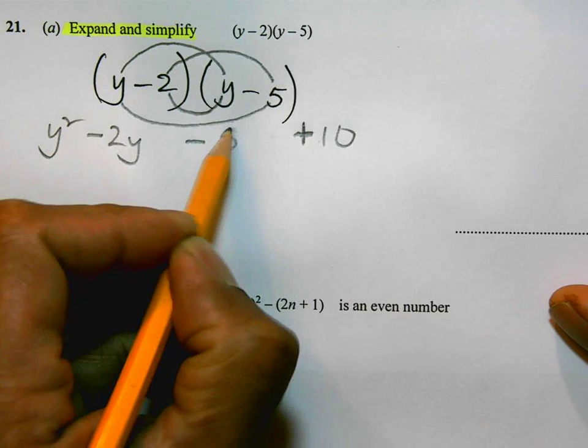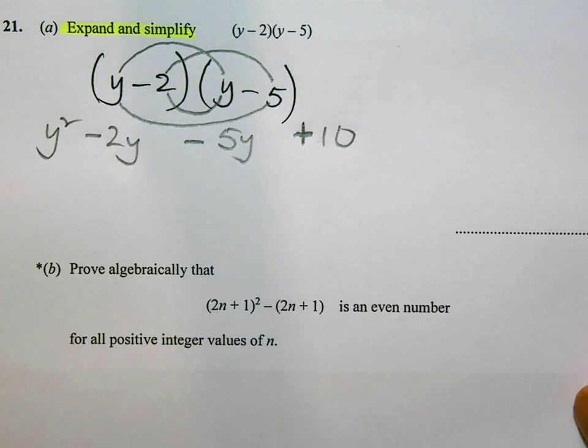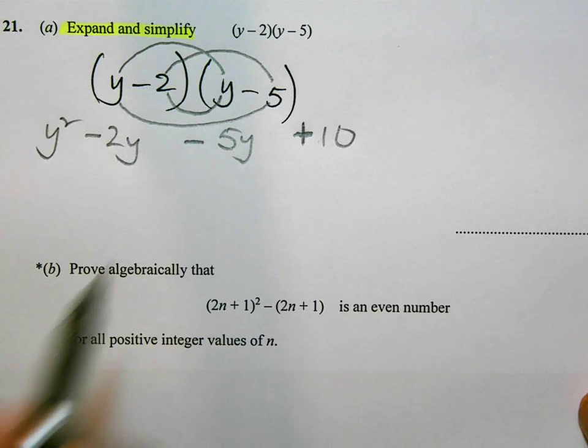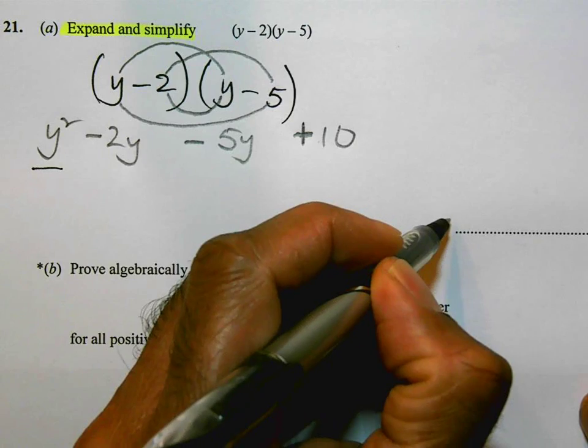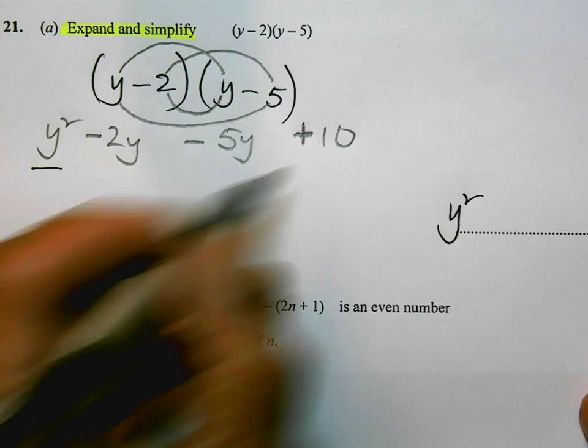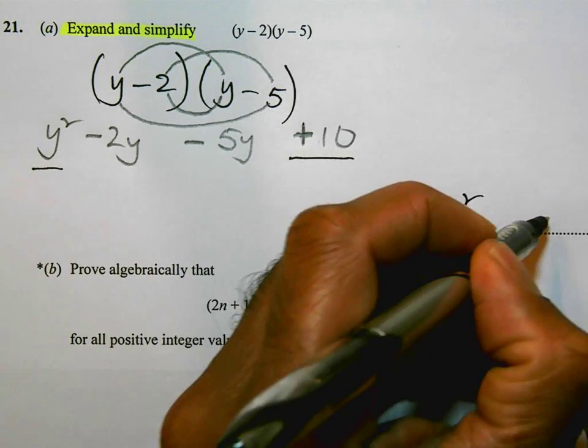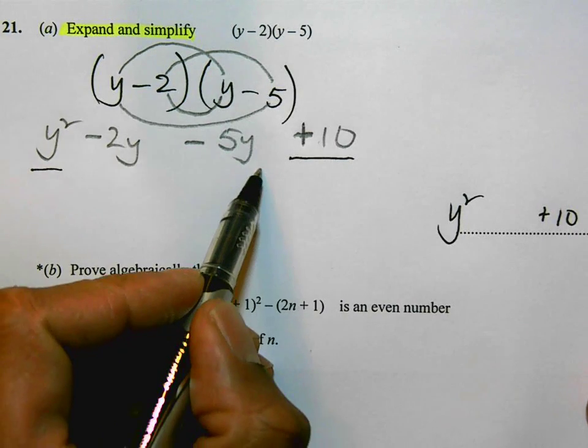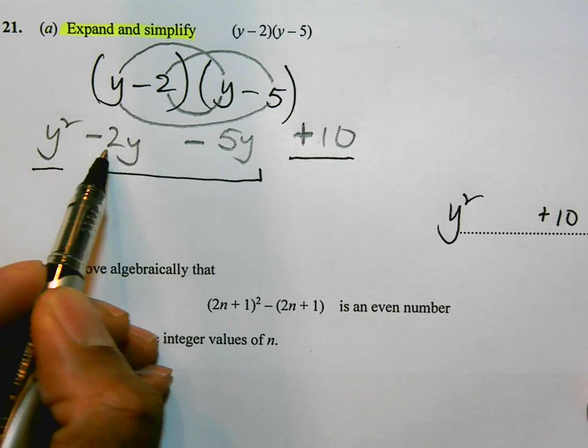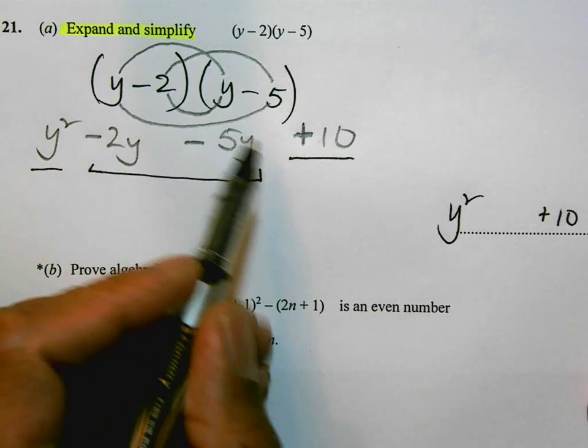This question is worth two marks, and having worked this out you've picked up one mark so far. I've got one y squared term which I'll write in my answer space. I've got one number term which is positive 10 which I'll put in my answer space as well. And in the middle I have two y terms, minus 2y and minus 5y, which together combine to give you minus 7y.